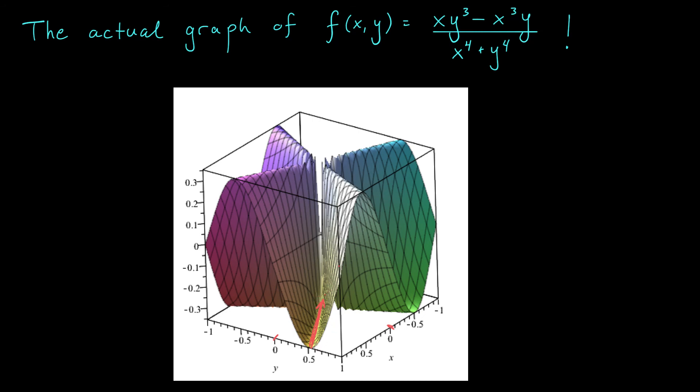But if I approach (0,0) along one of these ridges, well, then my function seems to be approaching a value of, say, 0.3. So, there you go. The limit doesn't exist, and we can see it in the graph.